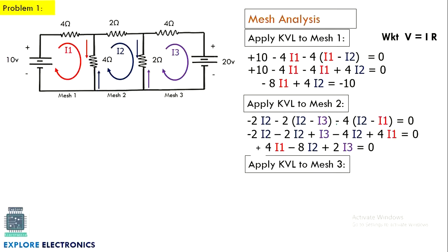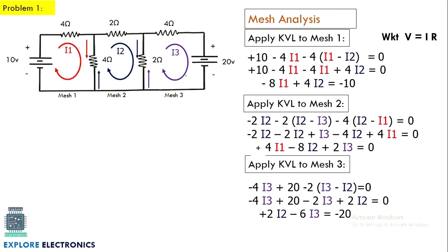Applying KVL to mesh 3 in the same way gives: 2·I2 minus 6·I3 equals minus 20. This is equation 3. We now have three simultaneous equations — equation 1, equation 2, and equation 3 — and by solving them we will get I1, I2, and I3. We can use any mathematical method or a scientific calculator.